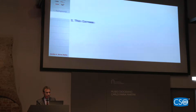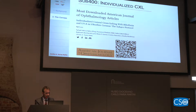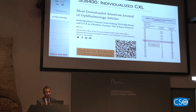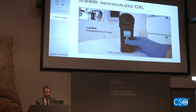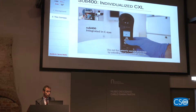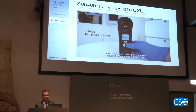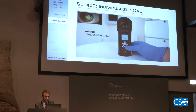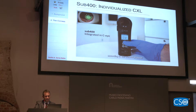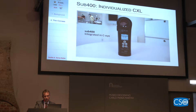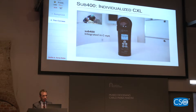The first point is about thin corneas. We published a paper in 2021 in the American Journal, and from then on we are able to treat corneas below 400 microns — that is no longer a contraindication. After one year we saw a flattening of about two diopters, comparable to the Dresden protocol. The CI device lets you input the thinnest pachymetry and it calibrates and adjusts the energy for each individual cornea.